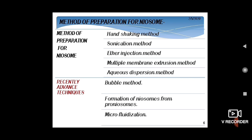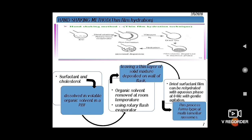Methods of preparation for Niosomes include: hand shaking method, sonication method, ether injection method, multiple membrane extrusion method, aqueous dispersion method, bubble method, formation from pro-niosomes, and microfluidization. The hand shaking method, also known as the thin film hydration method, involves adding a surfactant and cholesterol mixture to a round-bottom flask, dissolving it in a volatile organic solvent, then removing the solvent at room temperature to form a thin film on the flask wall. The dried thin film is then rehydrated using the aqueous phase at 50–60°C with gentle agitation, forming a multilamellar niosome dispersion.